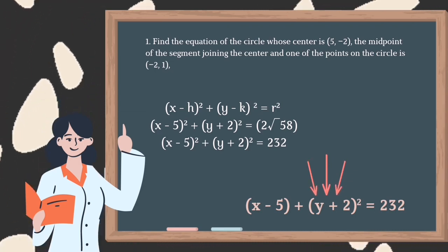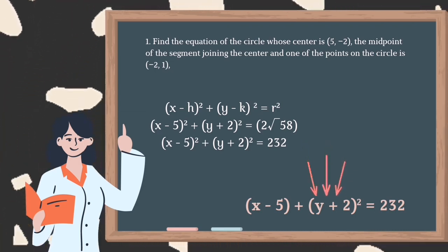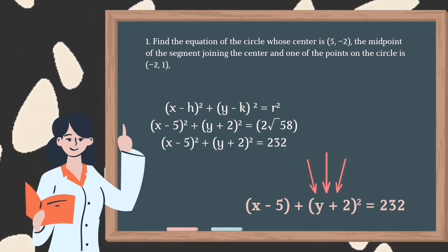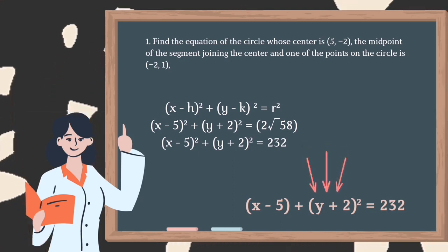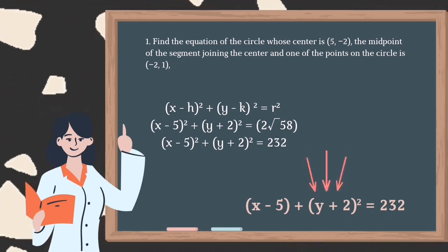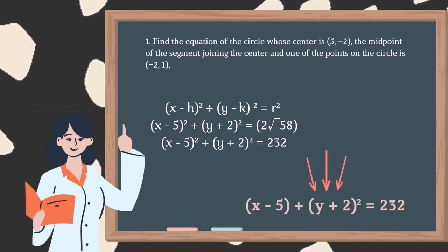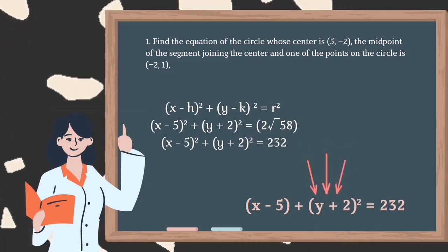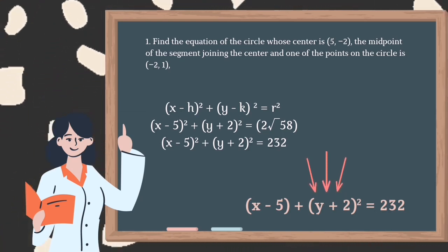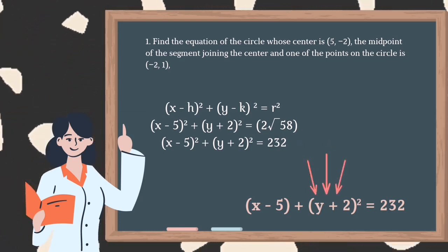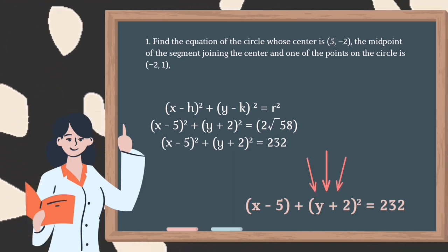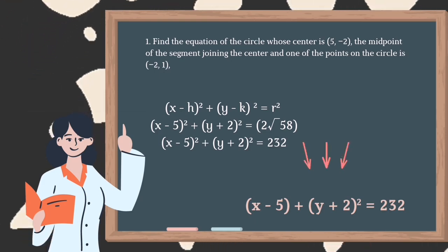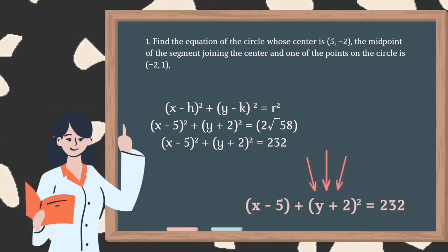Now that we have our values, in order to get the equation of the circle, we need to use the standard equation: (x - h)² + (y - k)² = r². Substituting our values, the equation of the circle is (x - 5)² + (y + 2)² = 232.